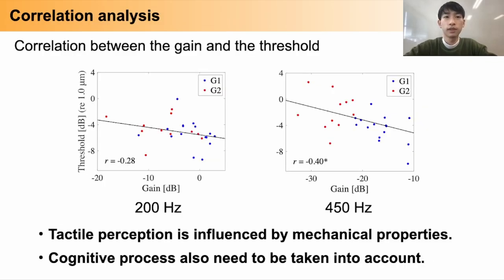This figure shows the distribution of gain and threshold. The result shows a significant negative correlation for 450 Hz vibration, but not for 200 Hz.